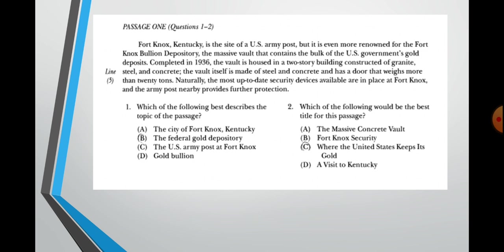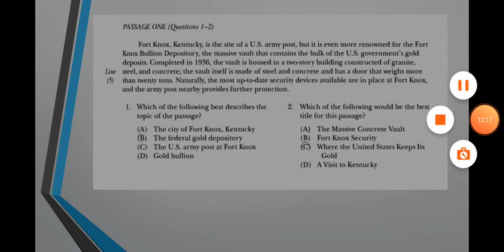Now for question two: which of the following would be the best title? The choices are: A, the massive vault; B, Fort Knox security; C, where the United States keeps its gold; D, a visit to Kentucky. The federal gold depository has the same meaning as 'where the United States keeps its gold,' so C is the correct answer. This is all about Skill 1: answer main idea questions correctly. If you have any questions or didn't understand something in this video, you can stop by my office or text me on Moodle. See you next time!